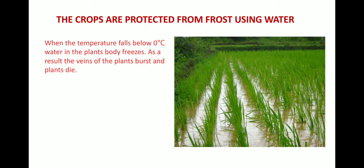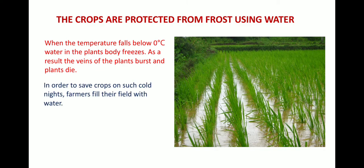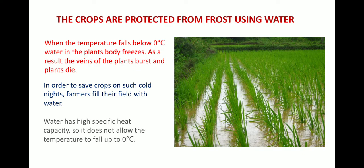Crops are also protected from frost using water. When the temperature falls below zero degrees Celsius, water in the plant's body freezes, the veins of the plants burst, and plants die. So on cold nights farmers fill the fields with water. As water has high specific heat capacity, it does not allow the temperature to fall to zero degrees Celsius, and thus saves the crops.